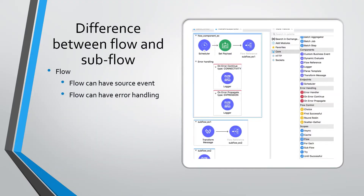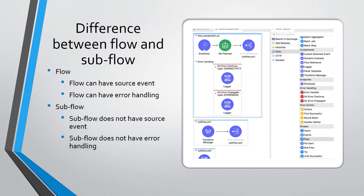There are two major differences between flow and subflow. First, as we noted, a flow can have a source event, but a subflow does not have any source event. Another major difference is that a flow can have error handling — you can define error handling for the flow — but inside the subflow, you cannot define error handling. It uses the error handling defined by the calling flow.